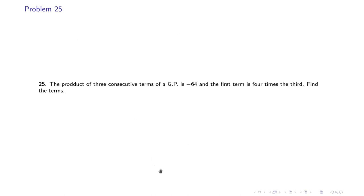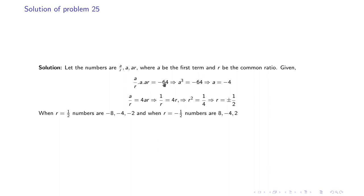Problem 25: The product of three consecutive terms of a GP is −64 and the first term is 4 times the third term. Since the product is given, we take the numbers as a/r, a, ar, giving a³ = −64 so a = −4. The condition first = 4 × third gives a/r = 4ar, so r² = 1/4, meaning r = ±1/2. When r = 1/2 the numbers are −8, −4, −2; when r = −1/2 the numbers are 8, −4, 2.